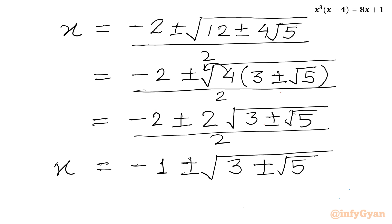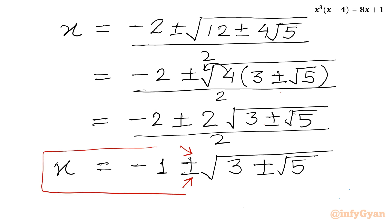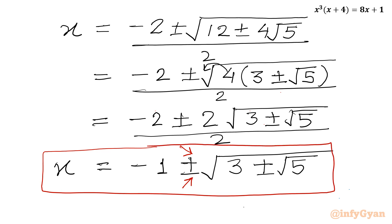Dividing through, our 4 solutions are minus 1 plus or minus square root of 3 plus or minus square root of 5. With the plus sign there will be 2 solutions, and with the minus sign there will be 2 solutions. So we have got 4 real solutions. I hope friends this video will be somewhere meaningful to you. Do not forget to like, share and subscribe. Bye bye till next video, good luck, take care of yourself.